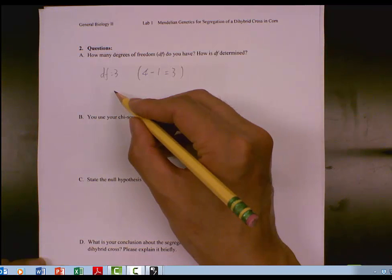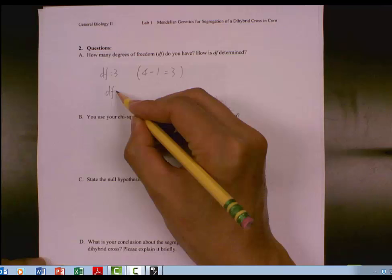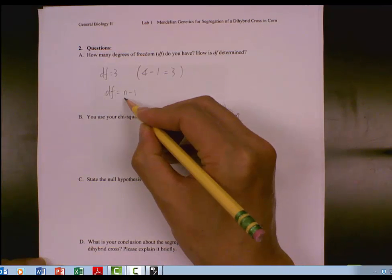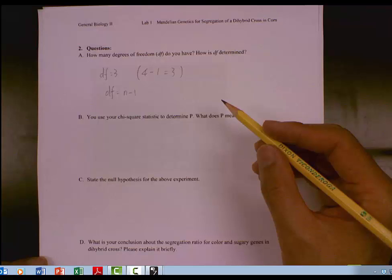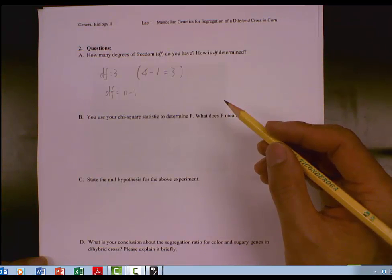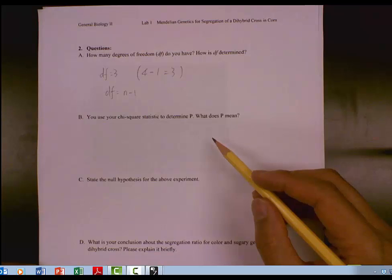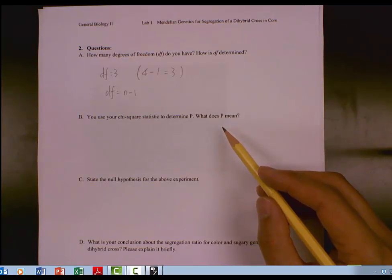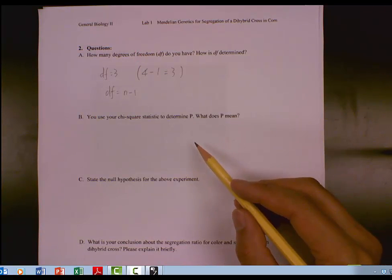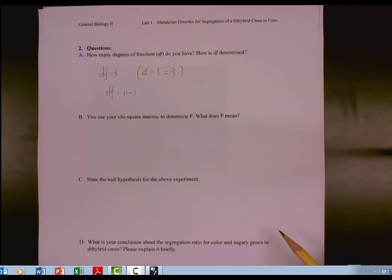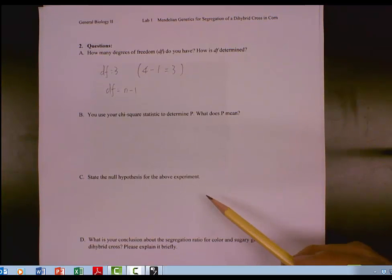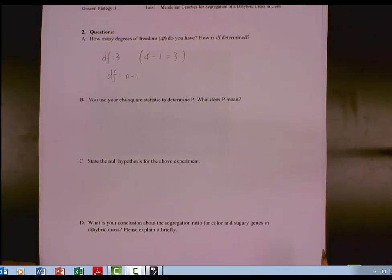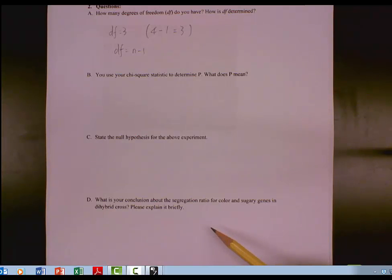Because the definition for degrees of freedom is n minus 1. n in this case is 4. And the degrees of freedom is 4 minus 1 equals 3. Then you use attached chi-square table to find the probability of fate. In this case, you need to get the chi-square and figure out that p-value by yourself using the attached table. State your null hypothesis. And finally, make a decision whether or not to accept your hypothesis.